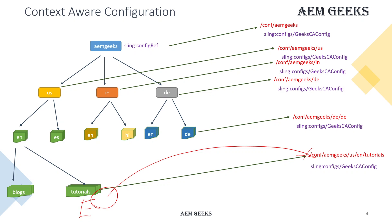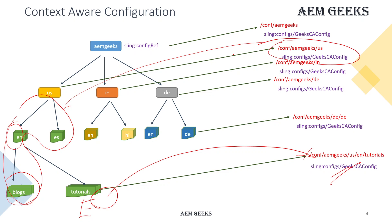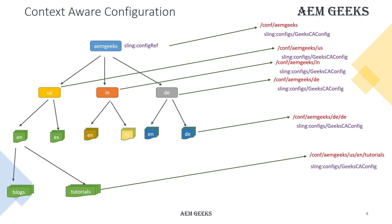From the subsection, I refer to the specific configuration folder, so all pages below that tutorial subsection pick configuration from that specific config. The rest of the pages — blogs, other English pages — keep picking from the parent configuration. Only the subsection for which you define a specific configuration will pick from that specific CA config. You are not writing any code at all; your content hierarchy and the sling:configRef property value decide which configuration to pick.